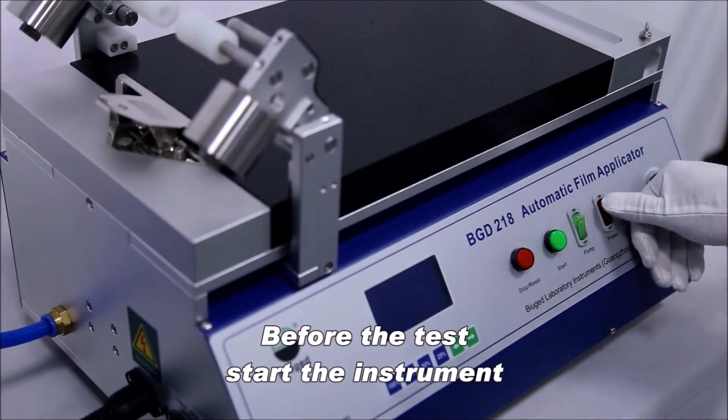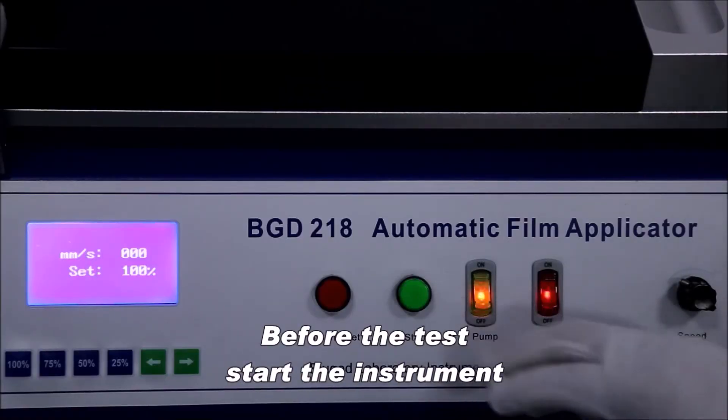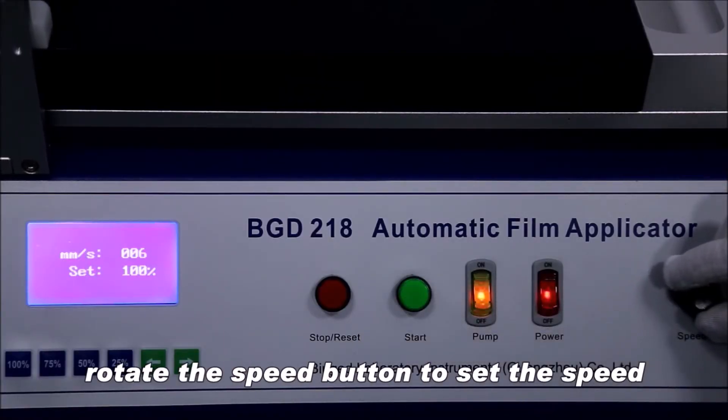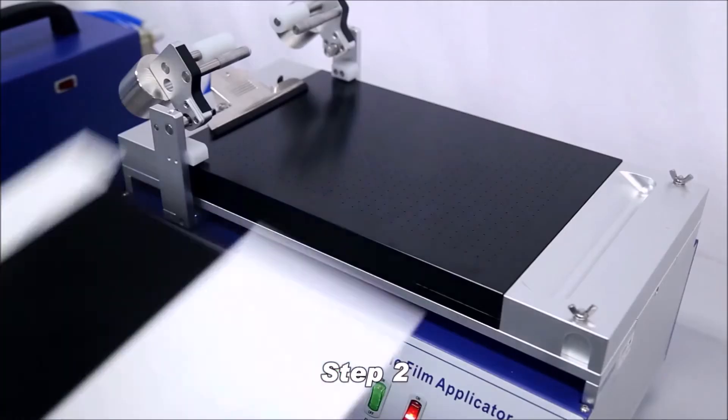Operation. Step 1: Before the test, start the instrument. Rotate the speed button to set the speed. The general speed is 8-10 mm per second.